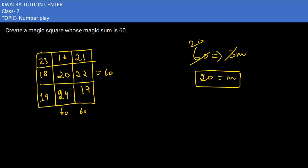Now you can check the diagonal as well. This is also 60 created. So you can understand, this is how you would be creating a magic square.